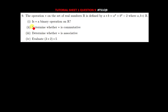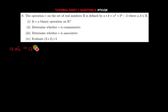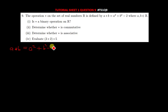The second question says: determine whether star is commutative. Our operation is a star b, which equals a squared plus b squared minus 2.